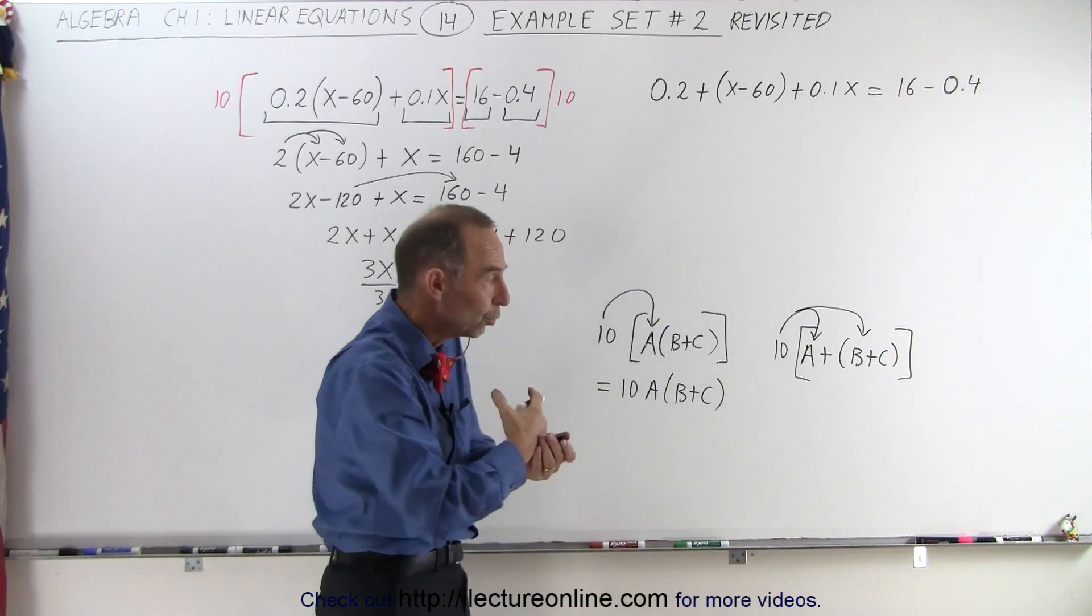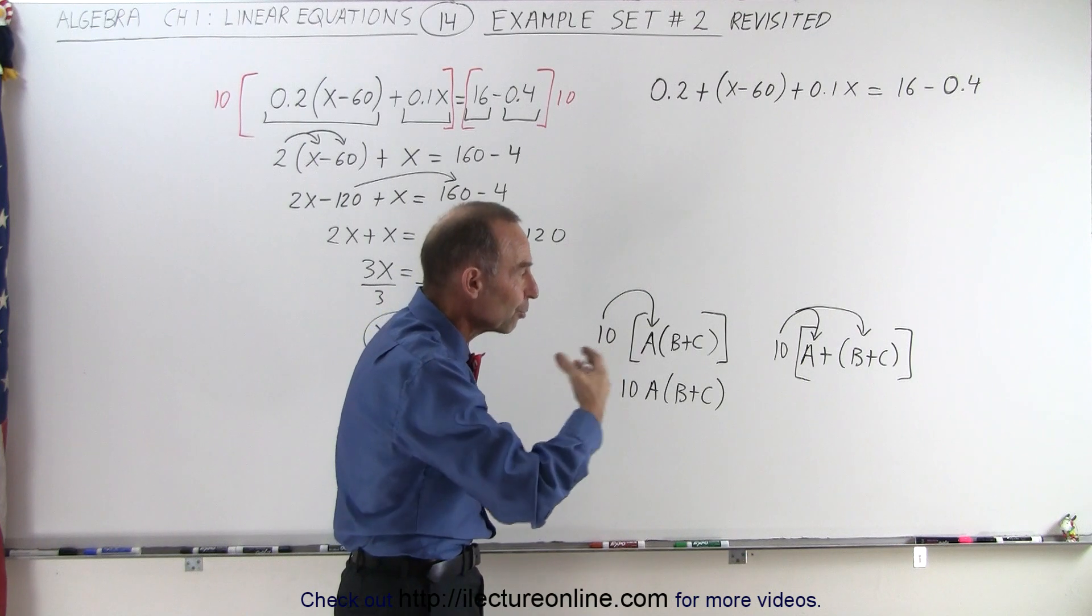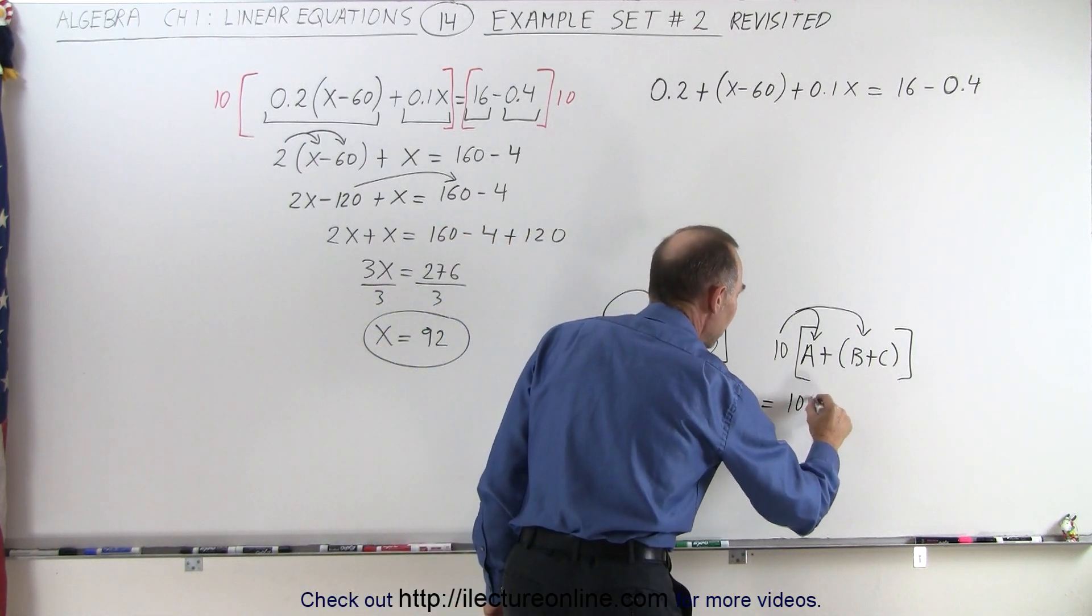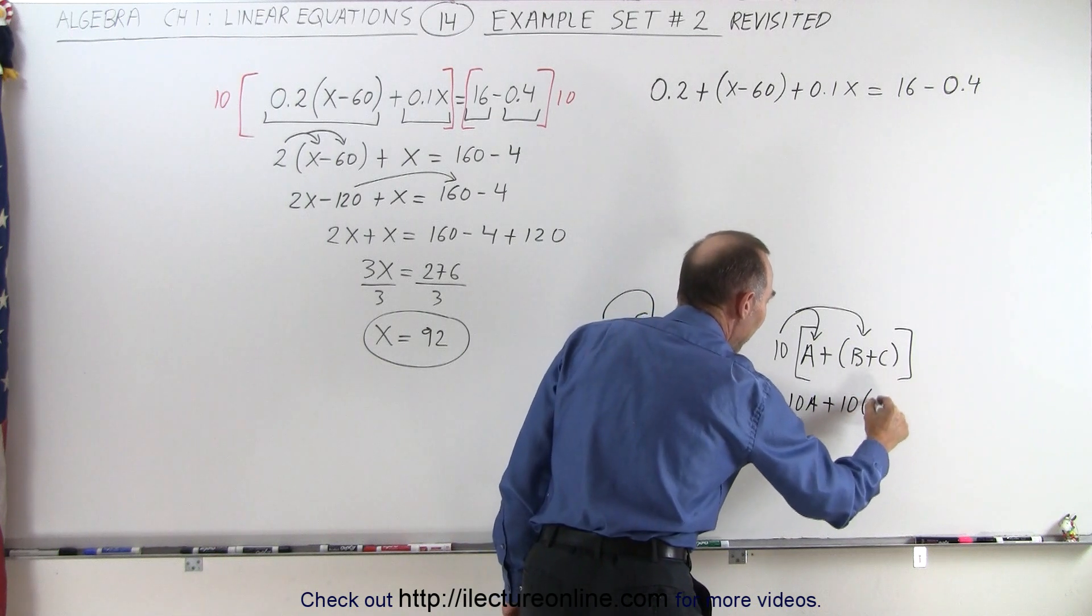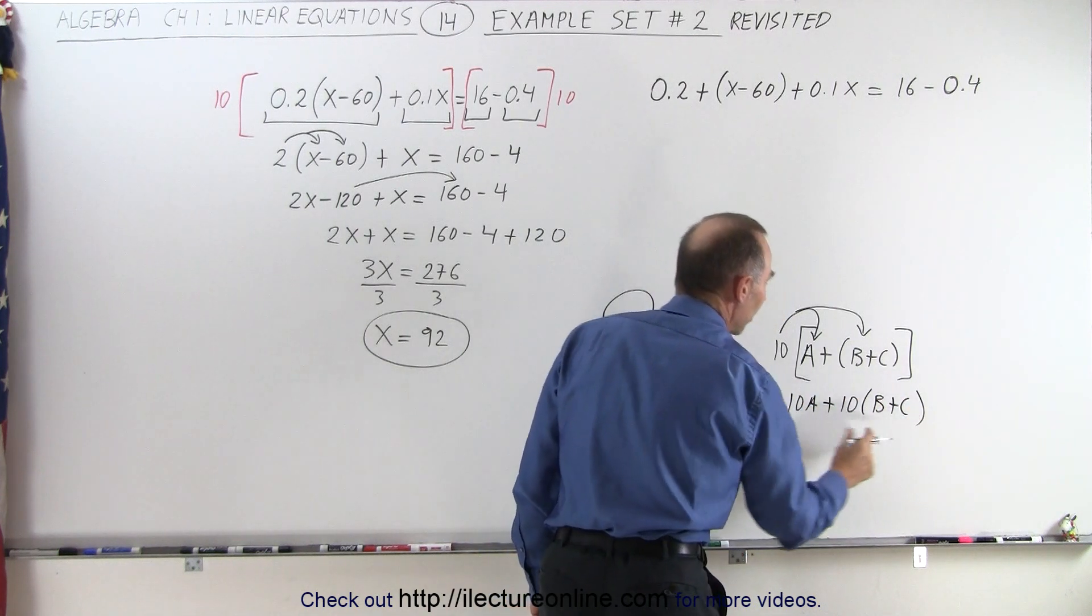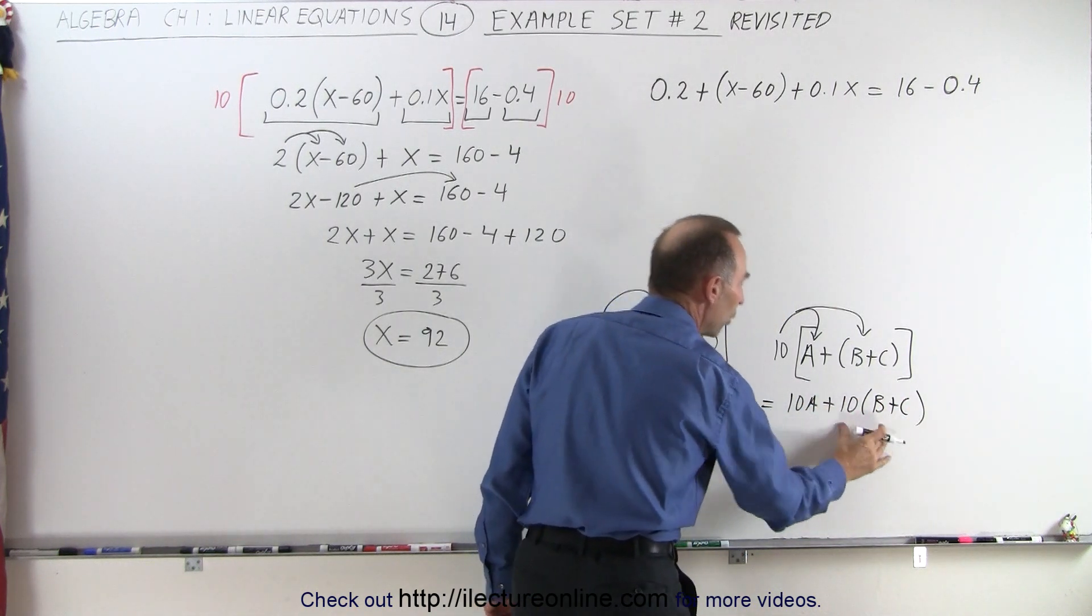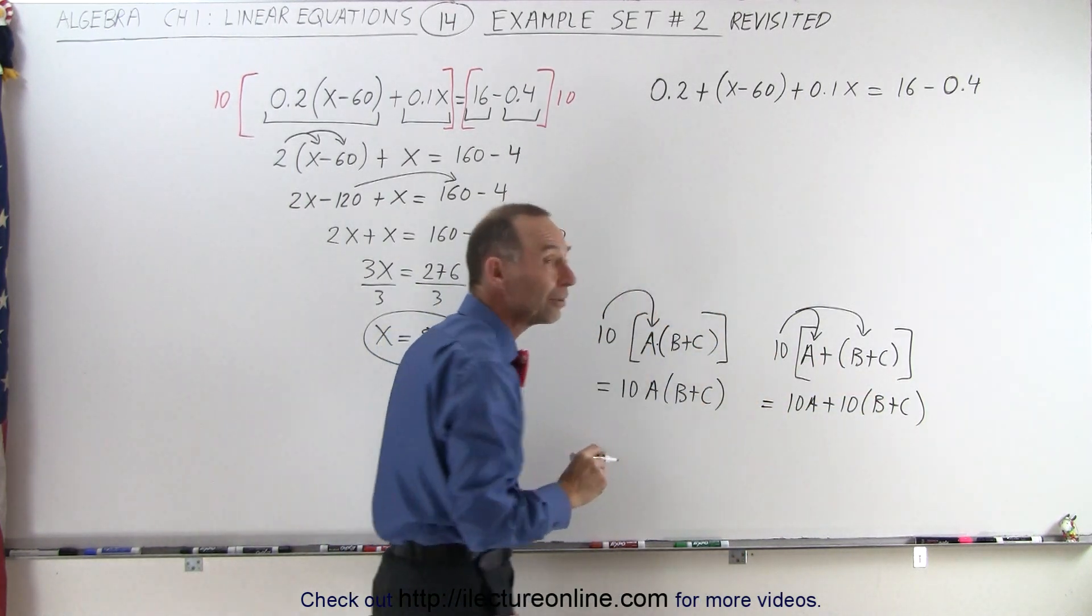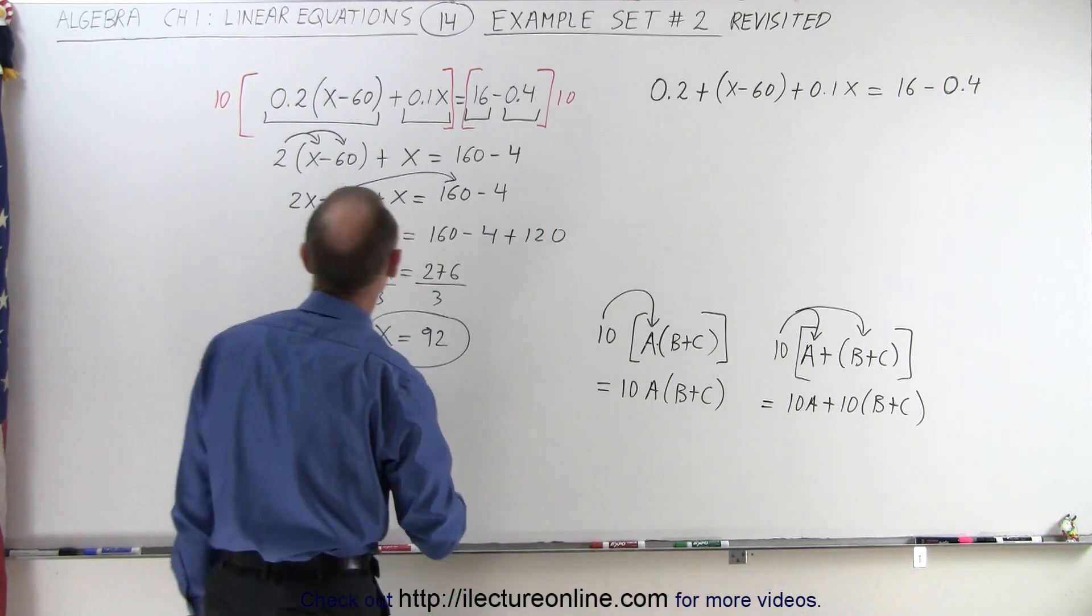There we would do the what we call the property of distribution, the distribution property. So this would become equal to 10a plus 10 times b plus c. Notice here we multiply both because there's two separate terms. Here we only multiply it once because they're multiplied together and so they're factors of one another.